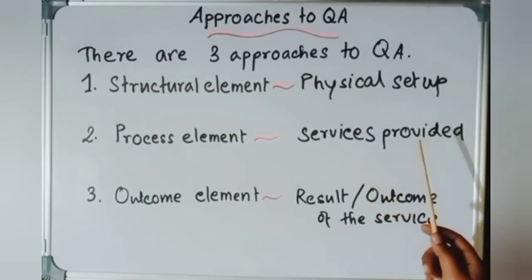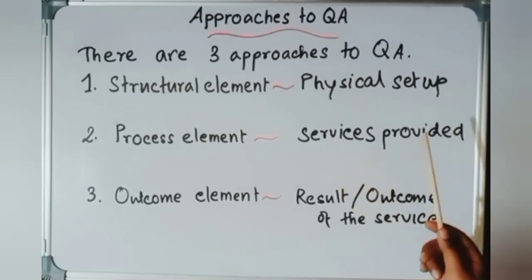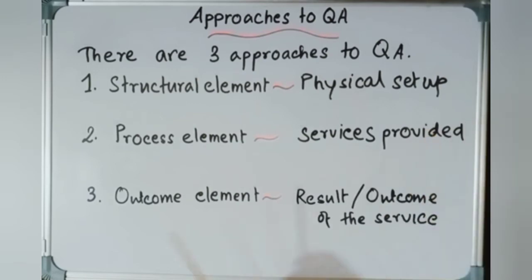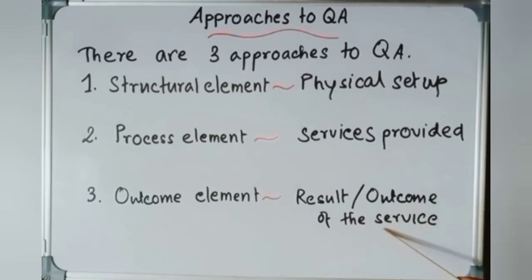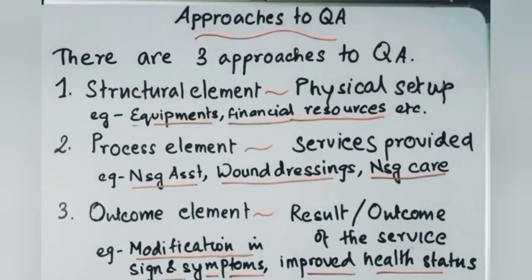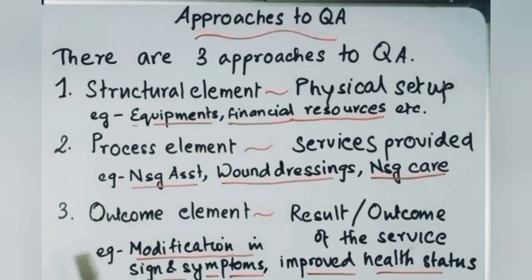Continuing with the process element: are you providing services without any problem, and can they be improved? The third approach is the outcome element — you look at your results or the outcome of the services and then try to improve them on a regular basis.